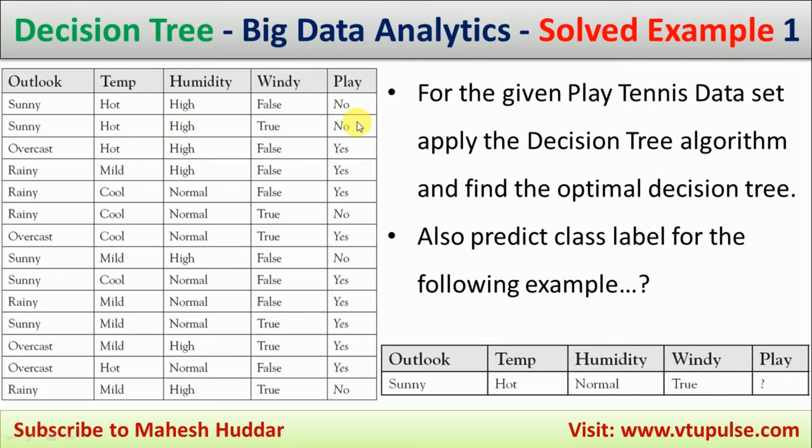Now if you want to draw a decision tree, first we need to identify one of these four attributes as the root attribute, or splitting attribute, and then start building the tree. The question is which attribute should be selected as the root node. We will write rules that generate the minimum error — the attribute giving the minimum error will be considered as the root node.